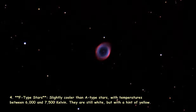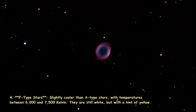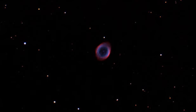4. F-type stars: Slightly cooler than A-type stars, with temperatures between 6,000 and 7,500 Kelvin. They are still white, but with a hint of yellow.